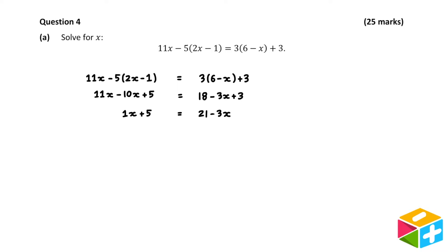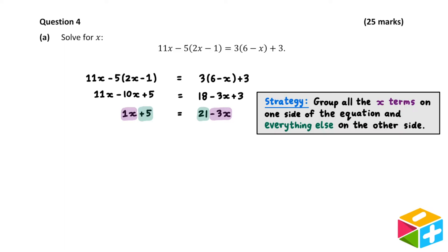Remember, our goal here is to isolate x all by itself on one side of the equation. If x only appeared once in the equation, then we could simply remove everything else from its side until we were left with the x. However, there's a bit of an issue here. x appears twice in our equation. We have a 1x on the left-hand side and a minus 3x on the right-hand side. To deal with this, we can use the following strategy: Group all the x terms on one side of the equation and everything else on the other side.